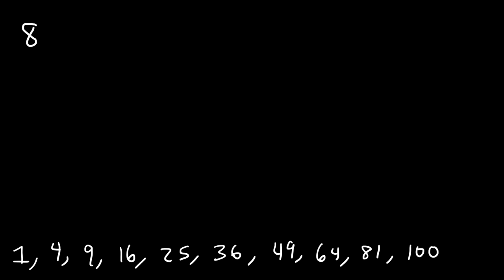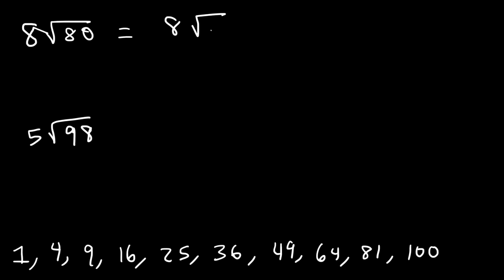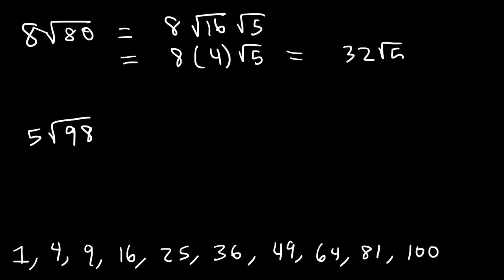Try these two problems: simplify 8 times square root of 80, and 5 times square root of 98. For square root of 80, divide 80 by each perfect square: 80 divided by 4 is 20, 9 doesn't go in, 80 divided by 16 is 5, and 25 doesn't go in. So the highest perfect square is 16. Write square root of 80 as square root of 16 times square root of 5. The square root of 16 is 4, and 8 times 4 is 32, so the answer is 32 square root 5.